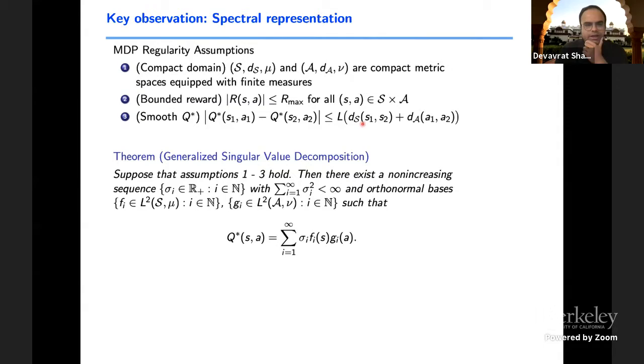We're thinking about a more generic abstract setting where you've got state and action space, which are endowed with appropriate metric, are compact metric spaces with finite measures. There is a bounded reward function. And the Q function is Lipschitz with respect to these metrics. Now, if we think of Q star, which is a function of state and action, think of this as a kernel inducing an operator, an operator on the L2 space from action space to the state space.